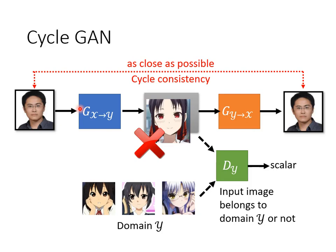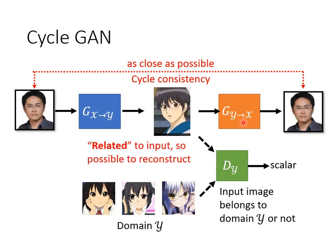After adding it, the first generator can't mess up anymore — it can't just create random output that has nothing to do with the input. Suppose the input is an otaku and the output is Kaguya (Shinomiya Kaguya). The second generator takes Kaguya as its input and must transform her back into an otaku. It has no way to know what the original input picture looks like. So in order to allow the second generator to successfully restore the original picture, the pictures produced by the first generator can't be too different from the input.